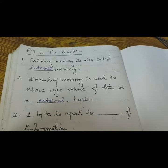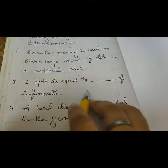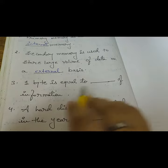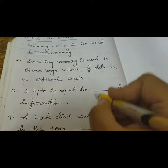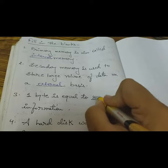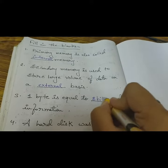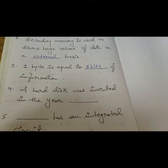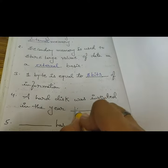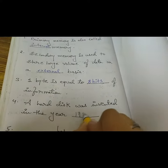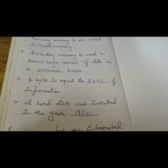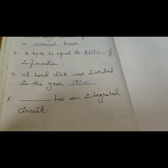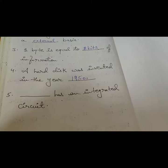One byte is equal to eight bits of information. A hard disk was invented in the year 1956. Which has an integrated circuit?